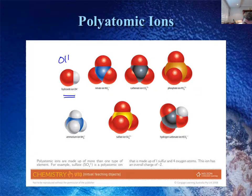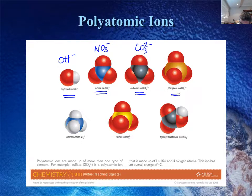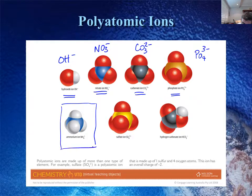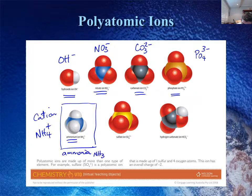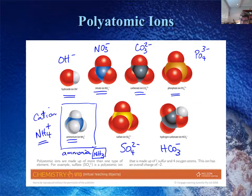Here are some examples of polyatomic ions. The hydroxide ion OH− has a 1− charge. The nitrate ion NO3 has a 1− charge. The carbonate ion CO3²− has a 2− charge. The phosphate ion PO4³− has a 3− charge. Of all these ions, only one is a cation — the ammonium ion, NH4+.